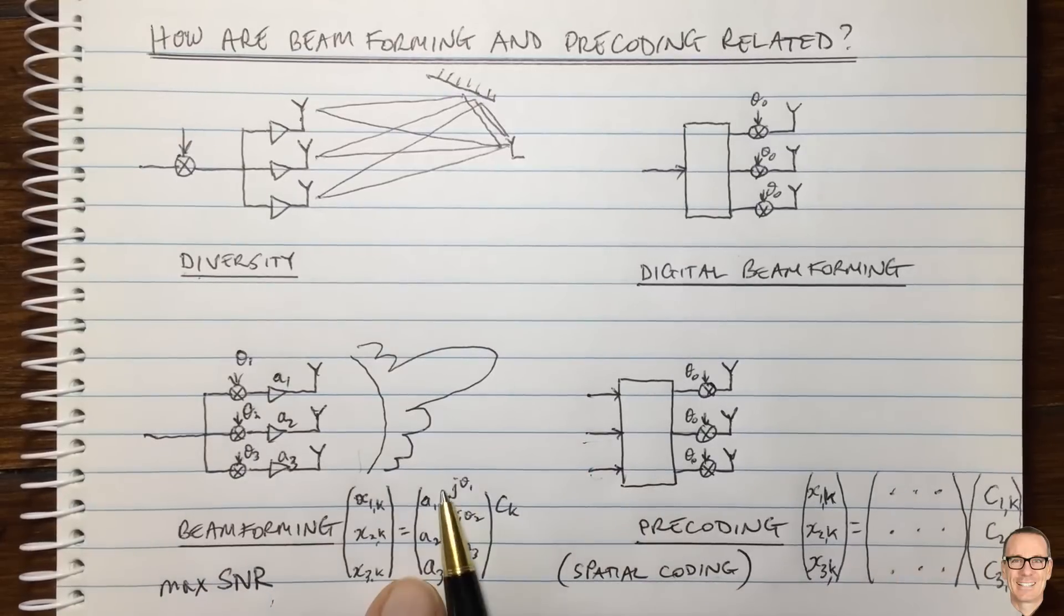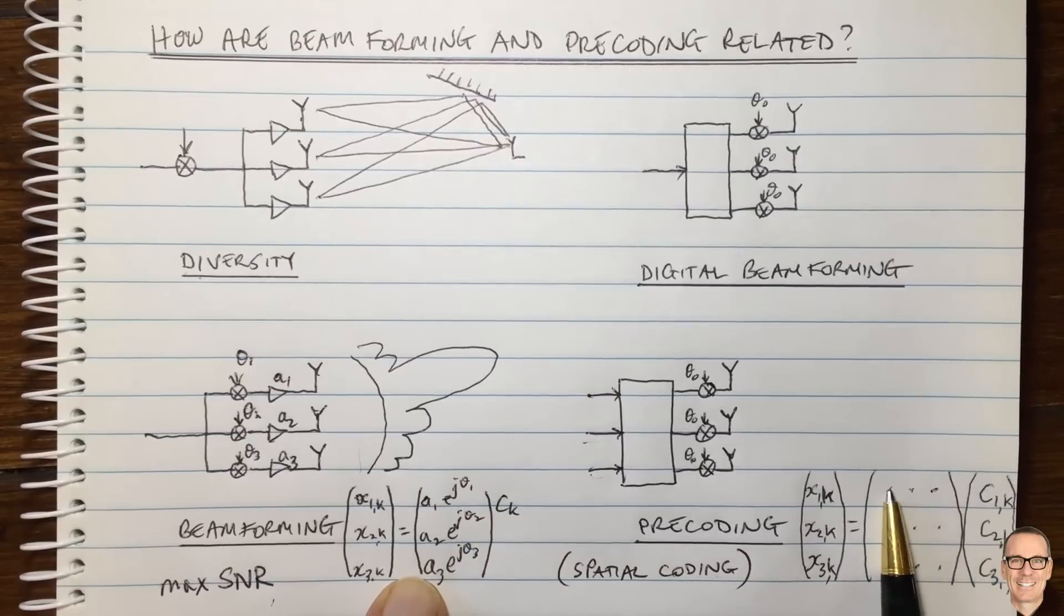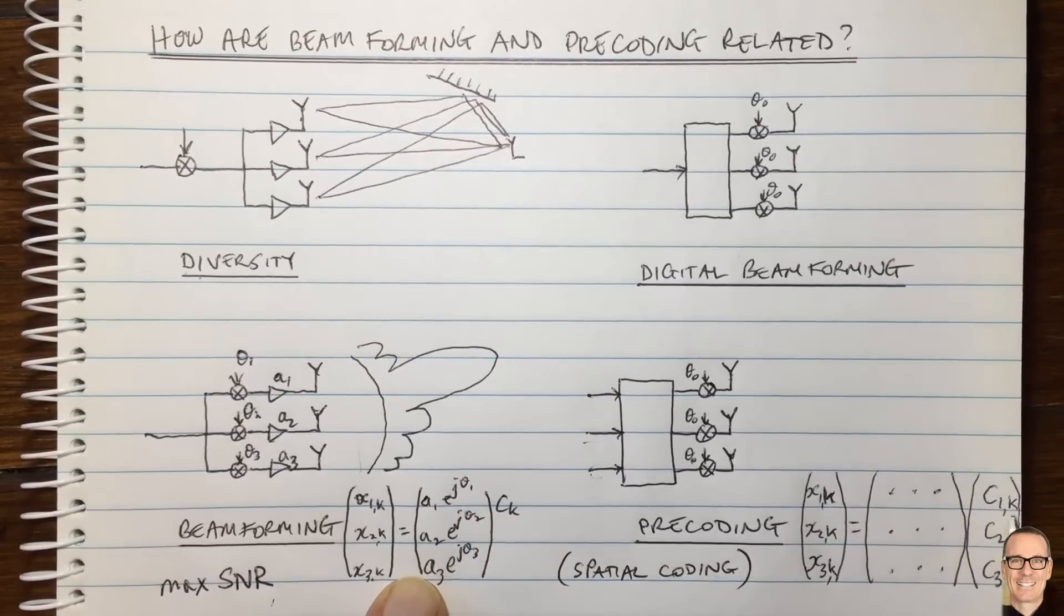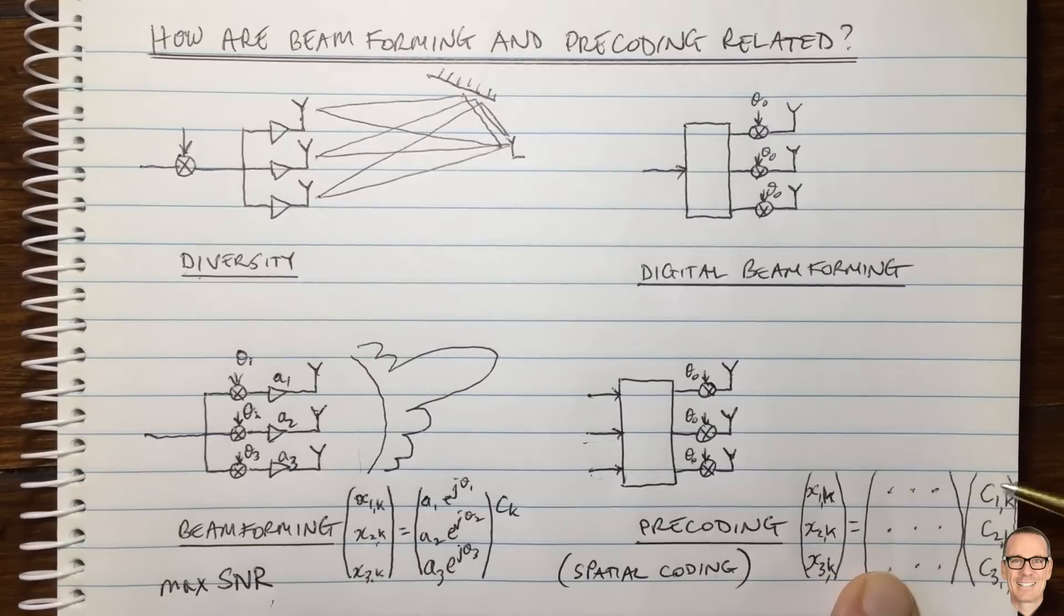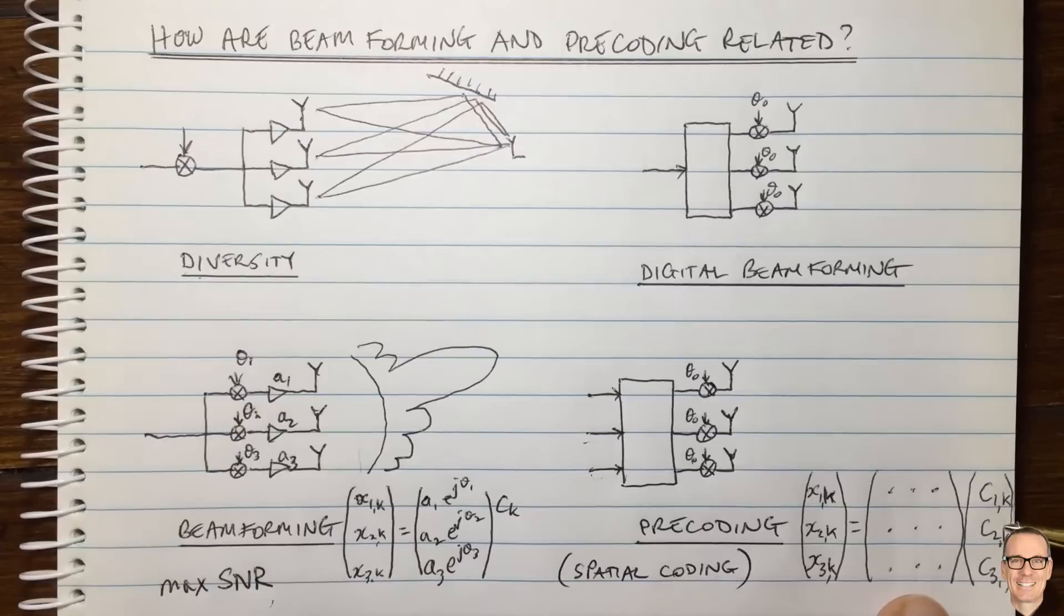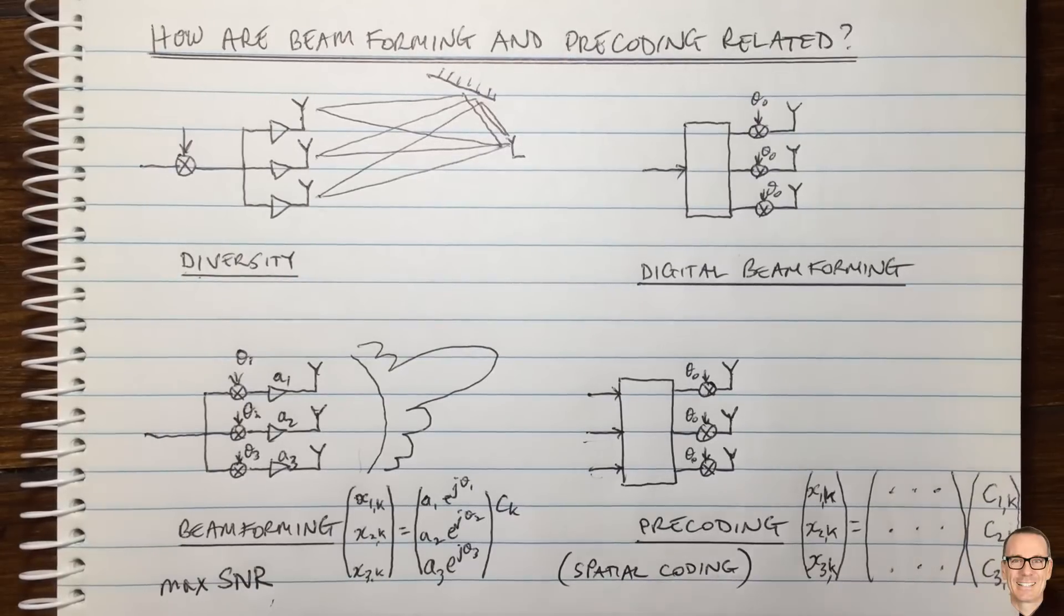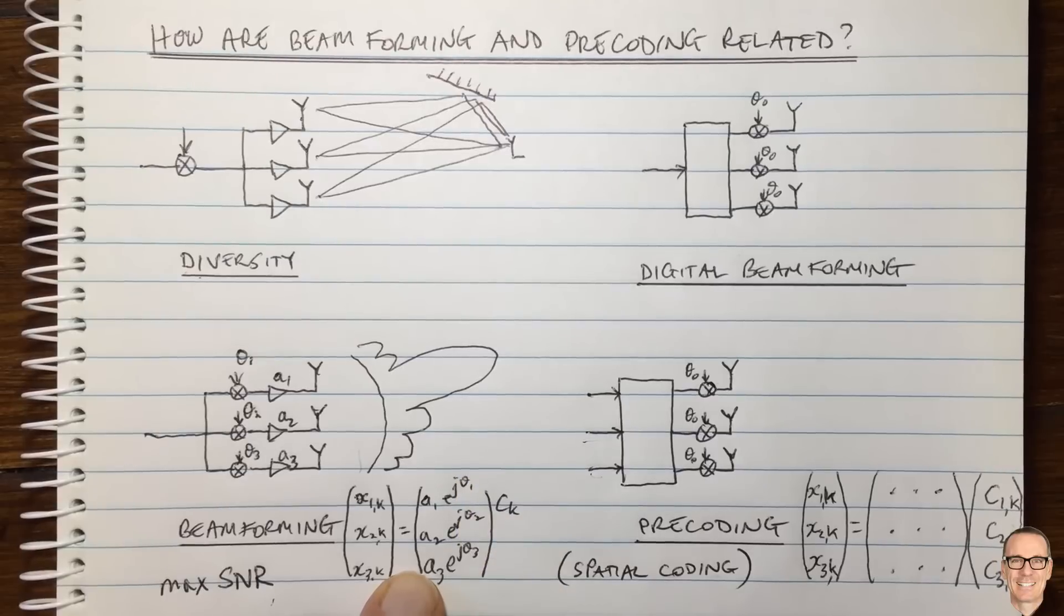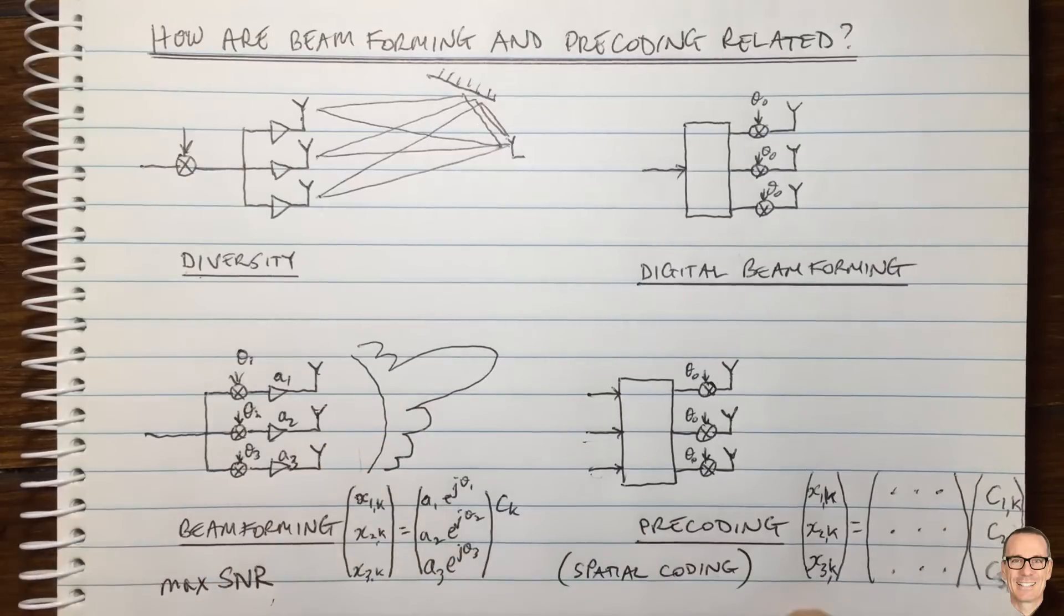And so now we've got, if we could implement it where we do a beam former for each of these different columns. So we could have a beam former for this one here, this first column here would be a beam former for stream one, the second column could be a beam former for stream two, the third column could be a beam former for stream three, by exactly implementing it the same way, and then we have two other columns for other directions.